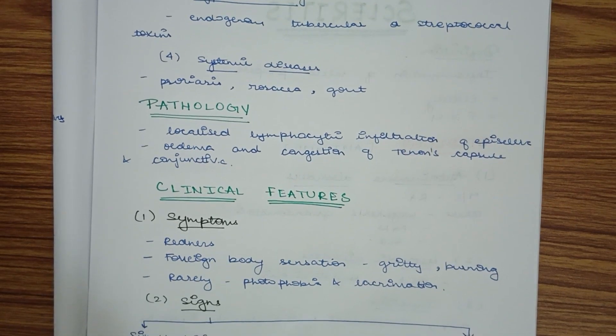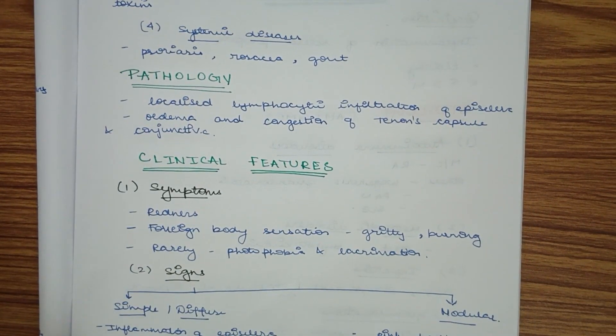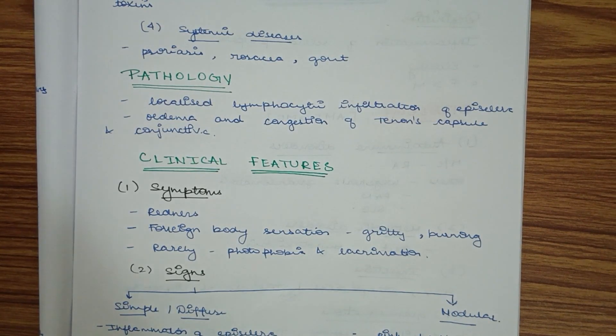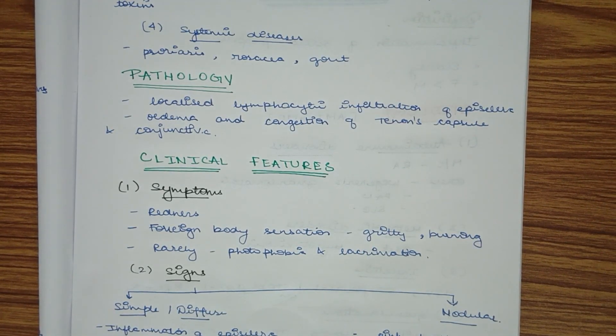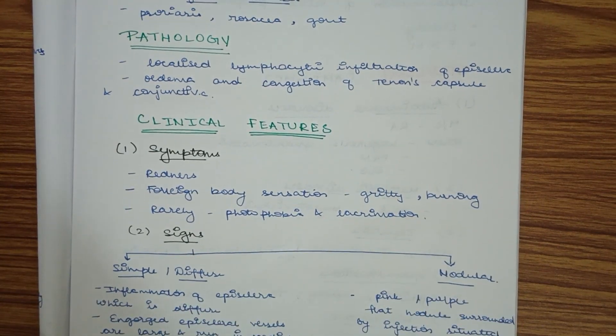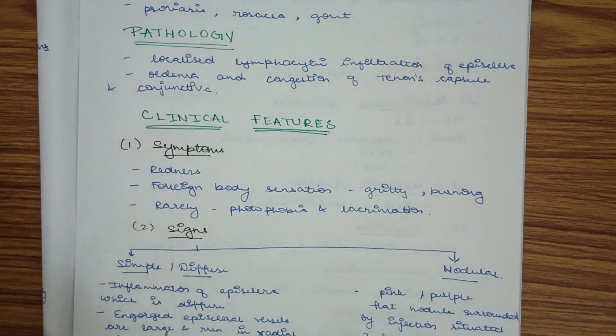The pathology of episcleritis involves localized lymphocytic infiltration of the episclera. Lymphocytes infiltrate the episclera, causing edema and congestion of overlying structures such as Tenon's capsule and bulbar conjunctiva, which is aligned in the anterior part of the sclera.